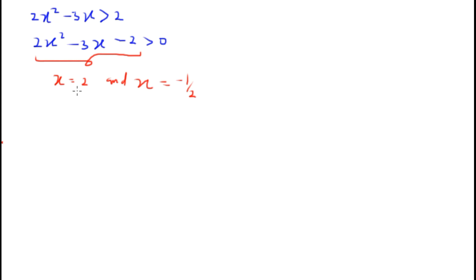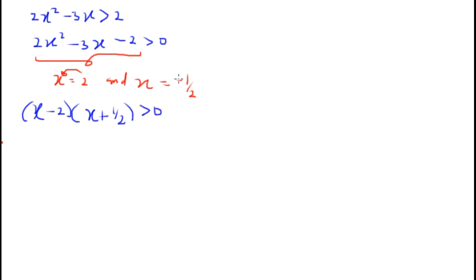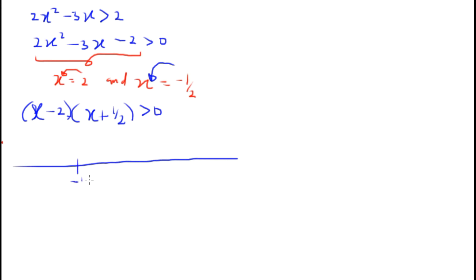From these endpoints we can recover the factors. Taking minus 2 and minus one-half to their respective sides gives the factors (x minus 2) and (x plus one-half), and the inequality becomes (x minus 2)(x plus 1/2) greater than zero. Now we plot the endpoints minus one-half and 2 on the number line.